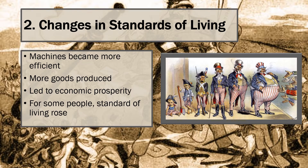One way economists measure standard of living is by tracing patterns in real wages — those adjusted for inflation. Real wages signify the amount of goods or services that can be bought. In the early years of the Industrial Revolution, some studies show that real wages grew slowly, but after 1819 the pace of growth accelerated, and between 1819 and 1852 they doubled. The growth of real wages paralleled the rise in consumption. By these measures, standards of living increased for people of all income groups.